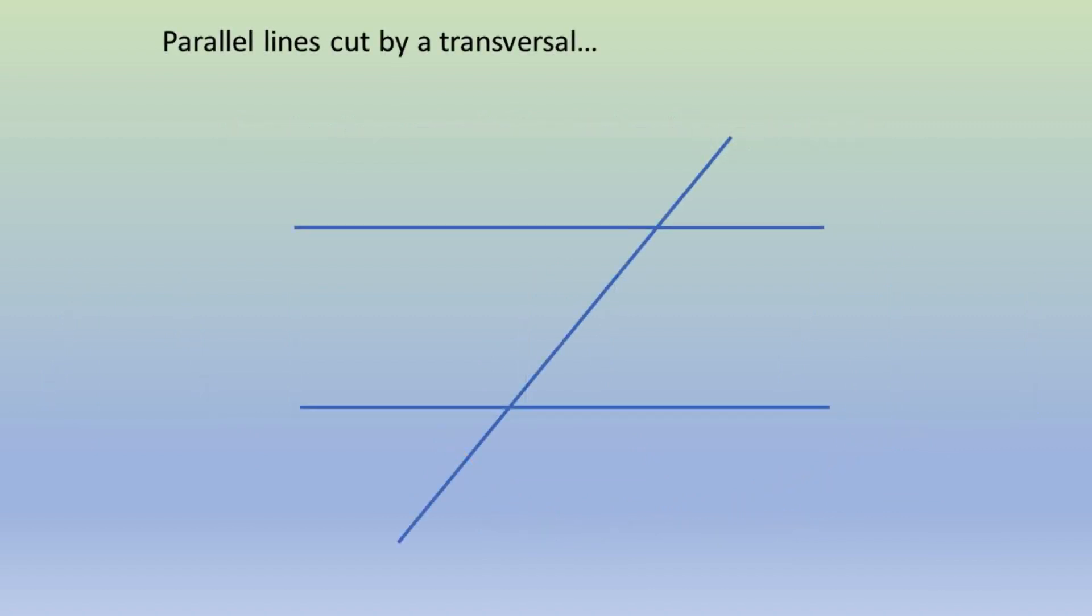Parallel lines cut by transversal have relationships with their angles. You can see these angles are the same and that in each case the four add up to 360 degrees.